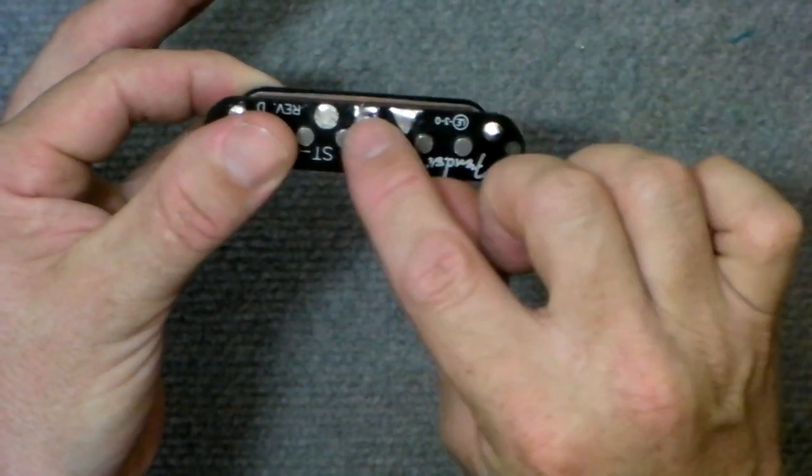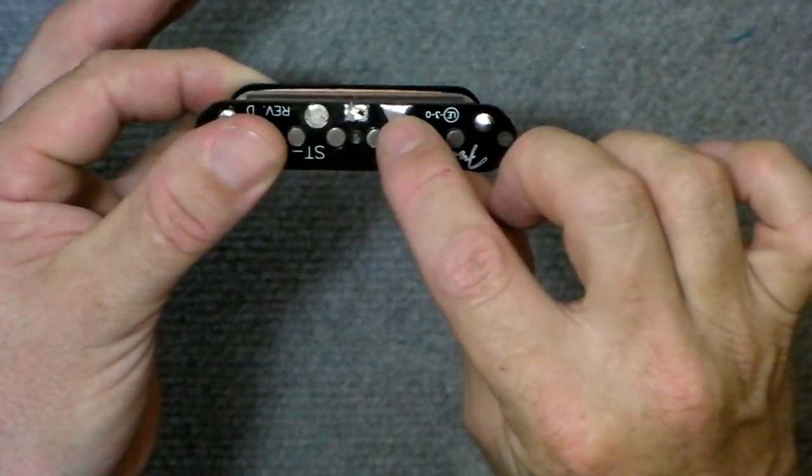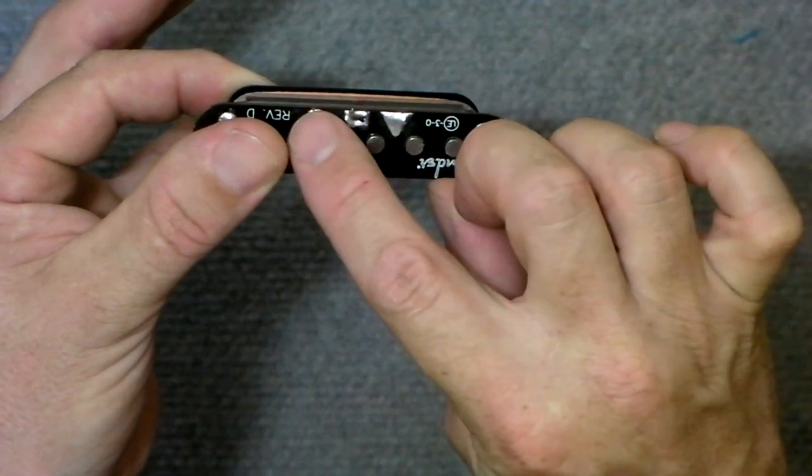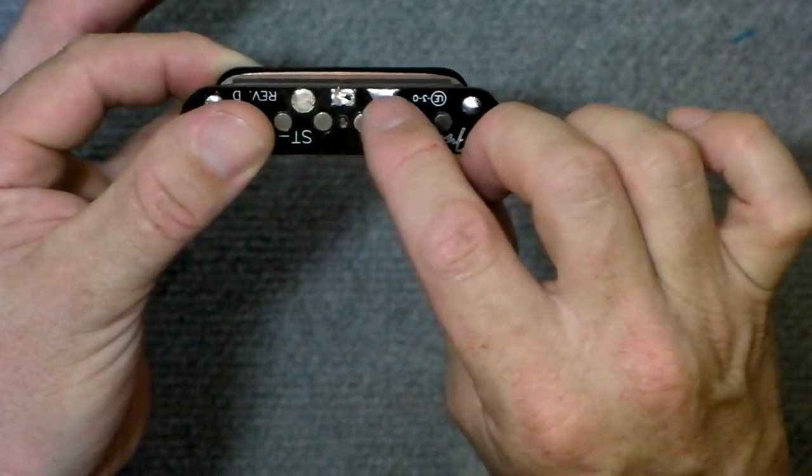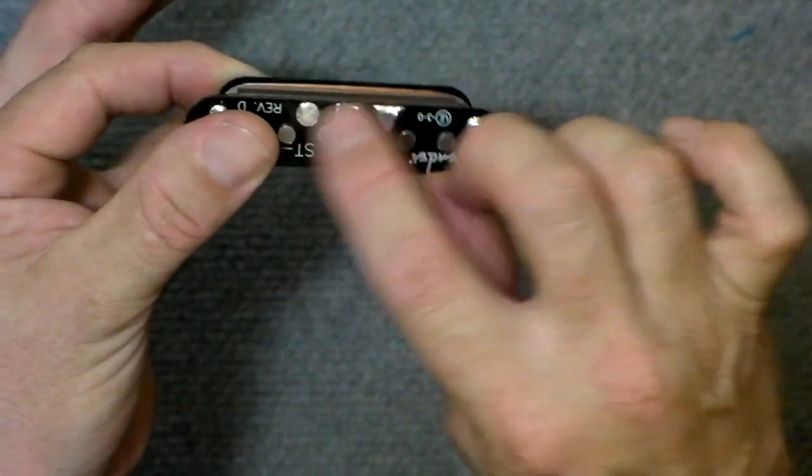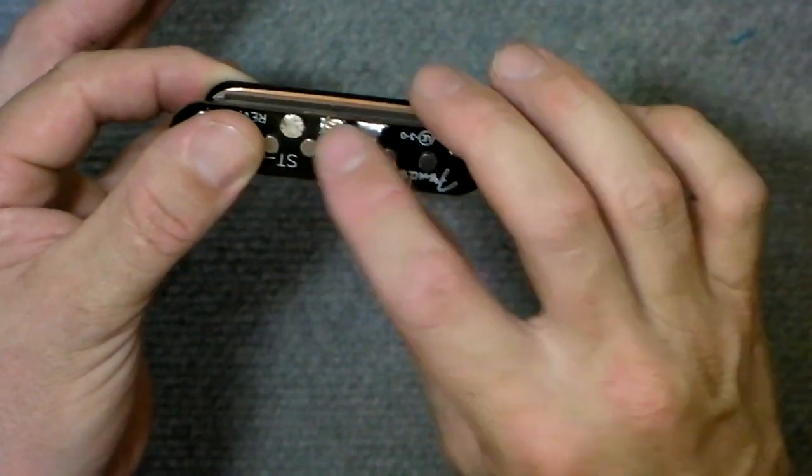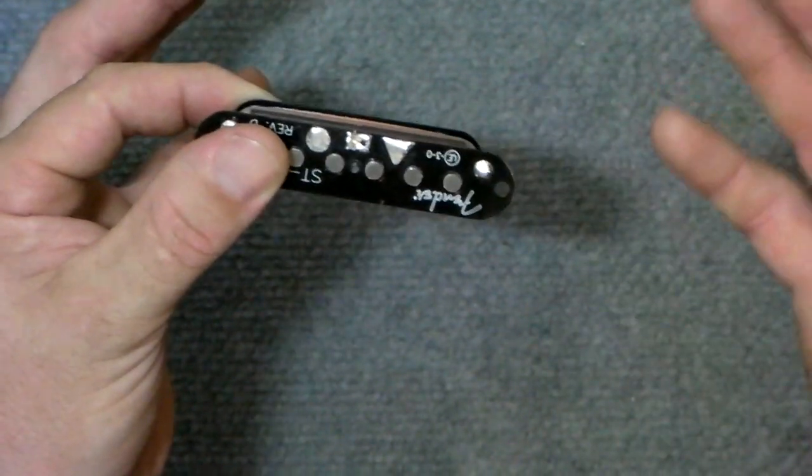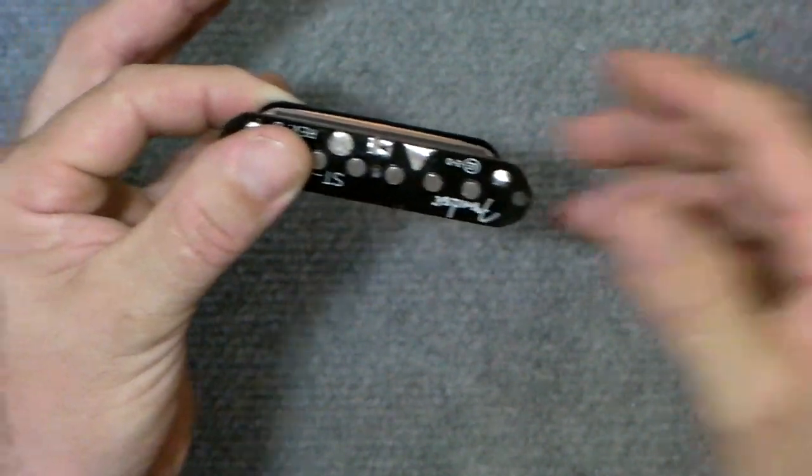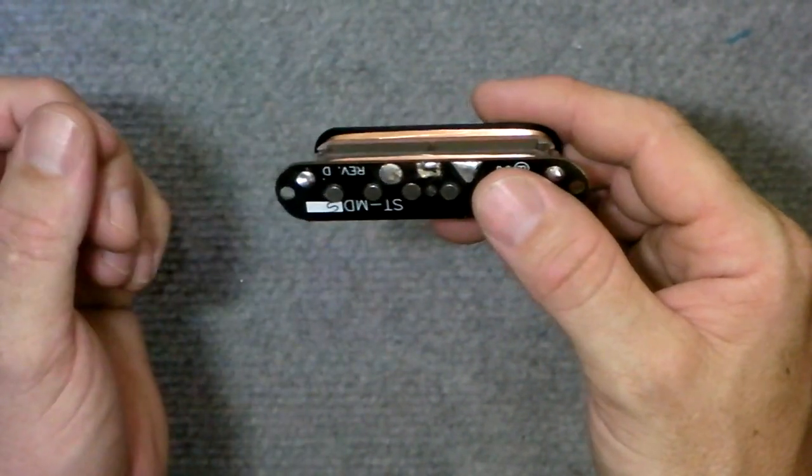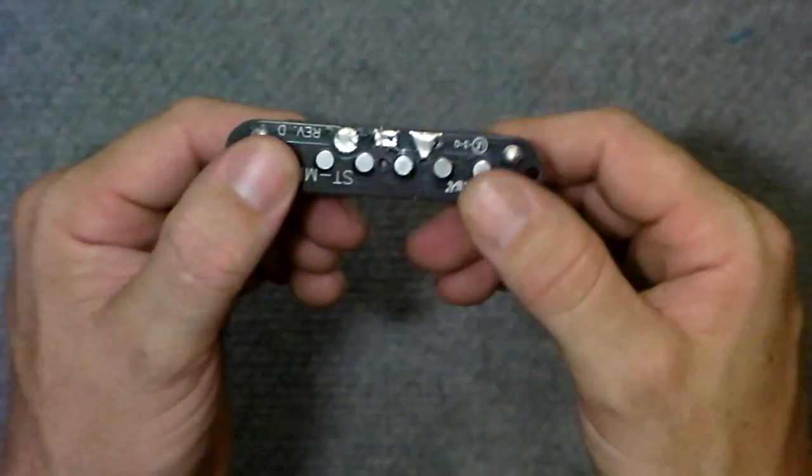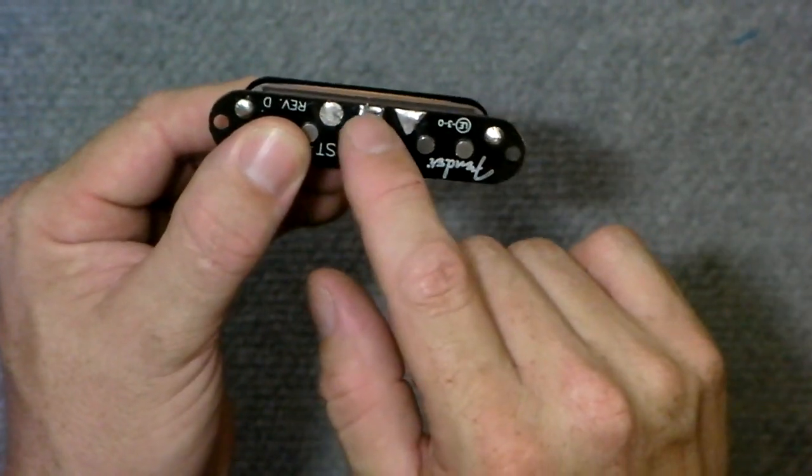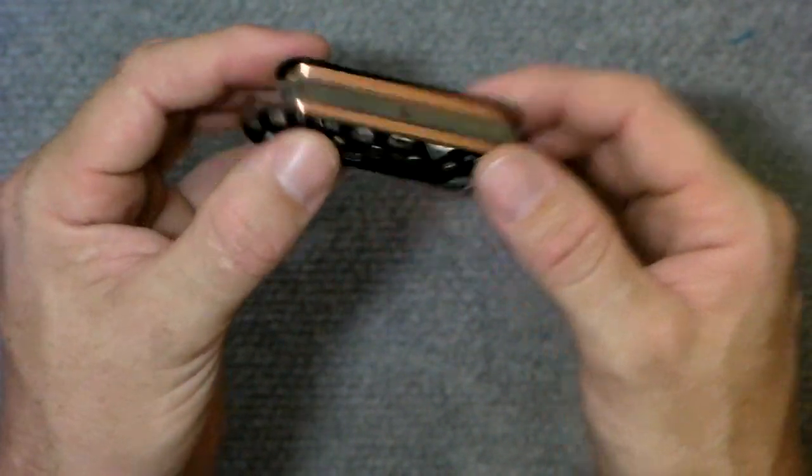So we've got three wires. We've got our negative and positive, and our ground. Now these negatives and positives, they're independent of the ground. So you can phase invert this thing to get that out of phase kind of quacky sound without any dramas at all, because you've got the third wire, which is pretty cool.